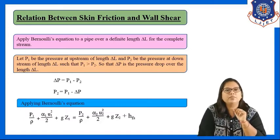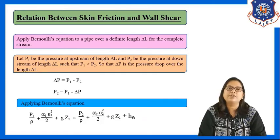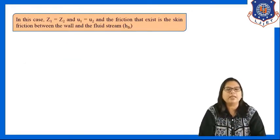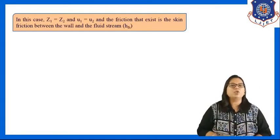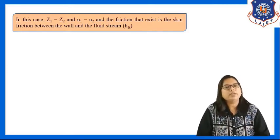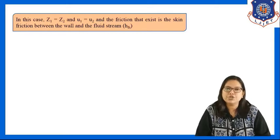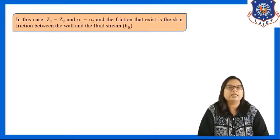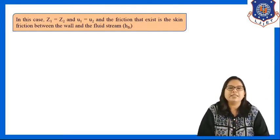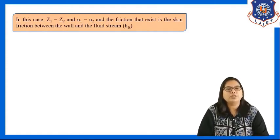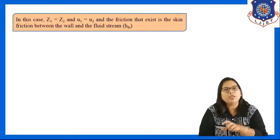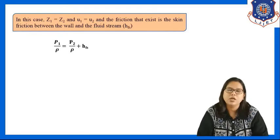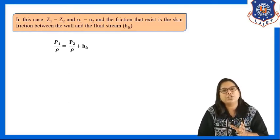For this system, in the Bernoulli's equation, Z1 equals Z2 because we have taken a horizontal pipe — the datum level is the same. And U1 equals U2 because steady flow is assumed. So the Z1, Z2 and U1, U2 terms in Bernoulli's equation cancel out, and the equation is reduced.